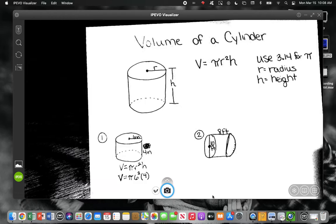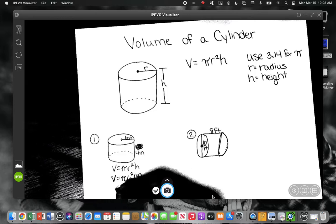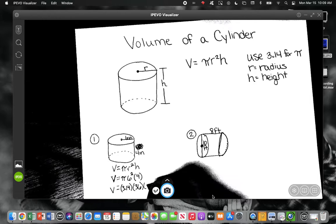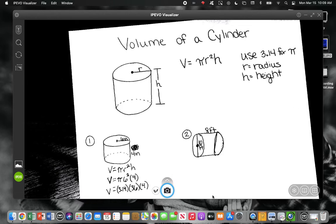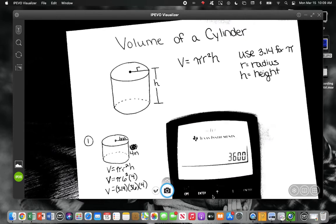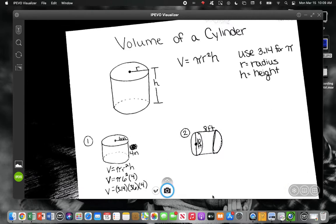And then h was 4. Okay, so we're just going to type into our calculator. What's 6 squared? 36. Let's multiply. We can go ahead and write that out. We'll write 3.14 times 36 times 4. So go ahead and multiply that in your calculator. And I believe your assignment today, we're rounding to the nearest tenth. Let's round to the nearest tenth today.